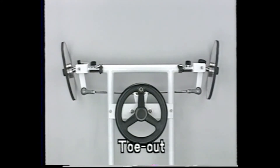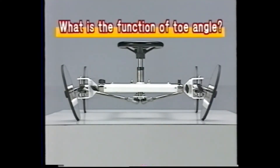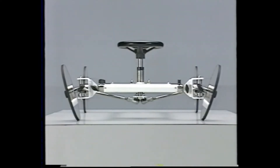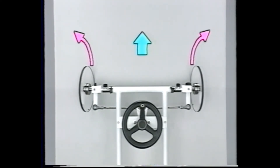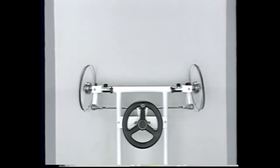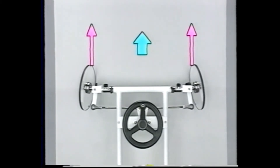The main function of toe angle is to cancel out the camber thrust generated by camber. When the front wheels are given positive camber, they try to roll outward as the car moves, so the wheels are given toe-in to cancel this tendency. As vehicles have recently started featuring a camber approaching zero, the toe-angle value is also becoming smaller.